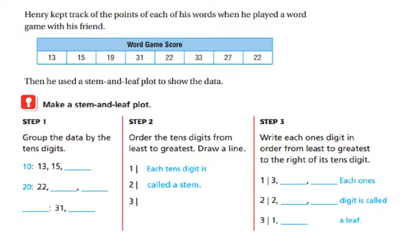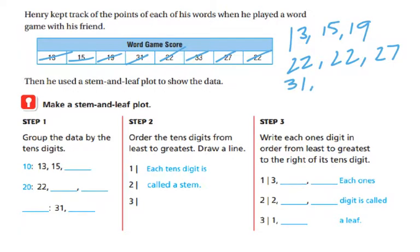So look at this. Henry kept track of the points of each of his words when he played a word game with his friends. So he got 13 points, 15 points, 19 points, 31 points, 22 points, 33 points, 27 points, and 22 points. When I get ready to use this stem and leaf to show the data, instead of just putting the scores like that, we're going to group the data by the tens digits. Now what I would do first is put them in order. I think that would make it easier. So I'd have 13, 15, 19. And then the 20s looks like I have two 22s and then 27. And then I go to the 30s. I have 31 and 33.